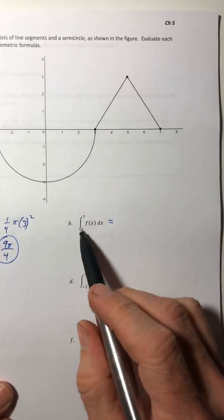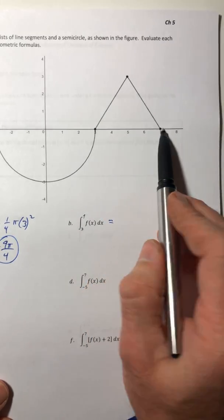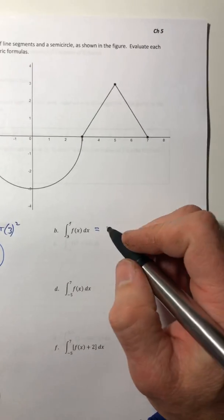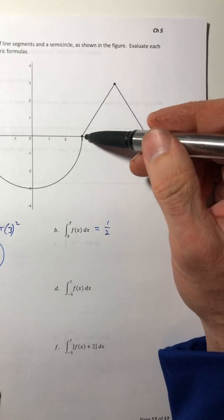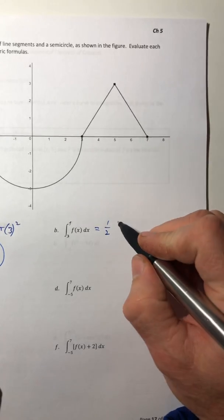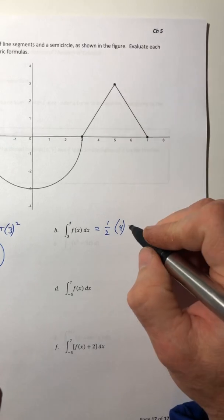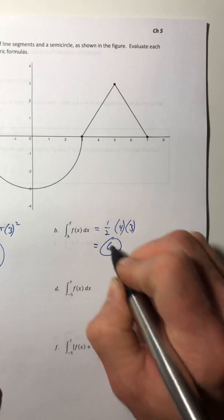Alright, the integral from 3 to 7. So 3 to 7. Now it's the area of that big triangle and it's on top, so it'll be positive. So one half times the base of 4 and then the height of 3, so we get 6.